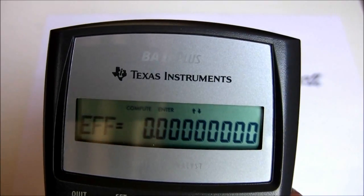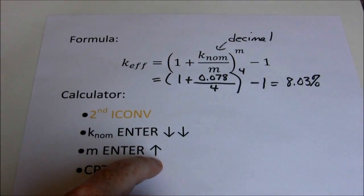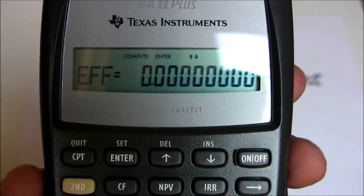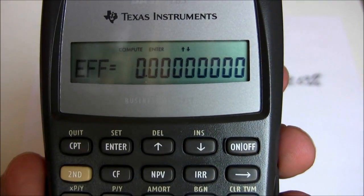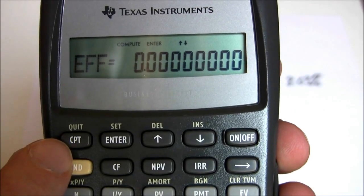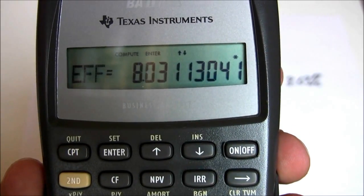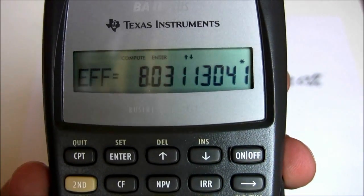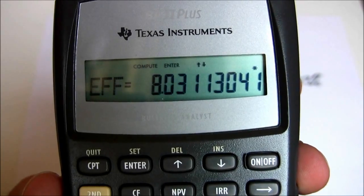And then go back up to that effective screen. Enter, up arrow. Now we're at our effective screen. Just like anything else with the Texas Instruments, once you're ready to get your final answer, you have to press that compute, CPT. And there we go. 8.03%. Same as we got before using the formula.